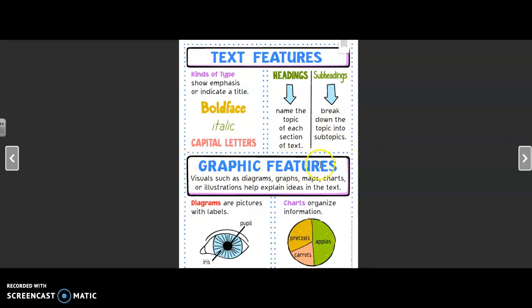So the next thing, we have graphic features. That means there's visuals to go along with it, like a diagram, a graph, maps, charts, illustrations, and those can help explain the ideas in a text. Sometimes just reading the words isn't enough to really help us understand, and that's what these graphic features are for.